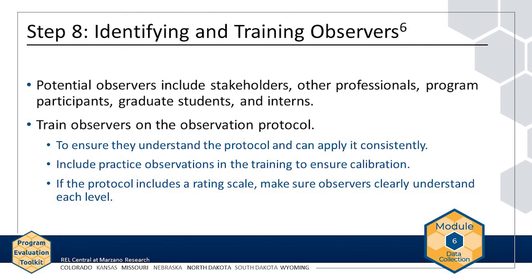Potential observers include stakeholders, other professionals, program participants, graduate students, and interns. Consider whether you need one or more observers. Train observers on the observation protocol to ensure that they understand it and can apply it consistently across observations. Include practice observations in training so that observers can use the protocol and compare notes to ensure calibration. If the observation protocol includes a rating scale, make sure that observers clearly understand each level of the scale.